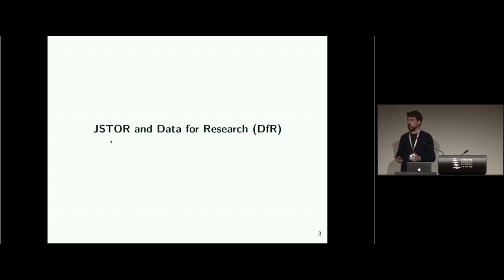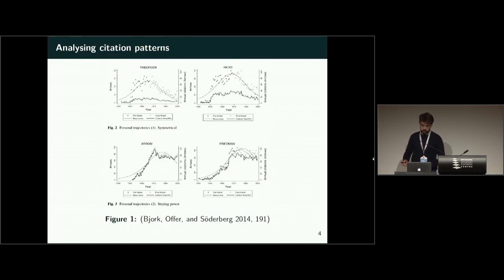It's centered around the social sciences and humanities, but you can find content from other disciplines as well. What is probably less known about JSTOR is that they have a service called Data for Research, where they give you access to basically all their content. You get access to metadata and the content of the articles for further analysis.